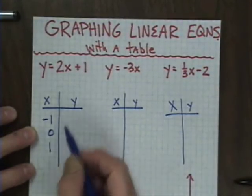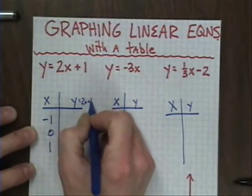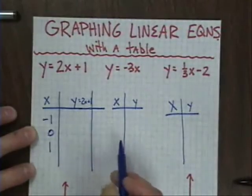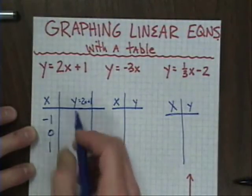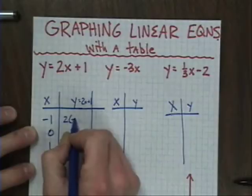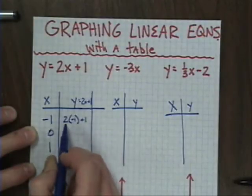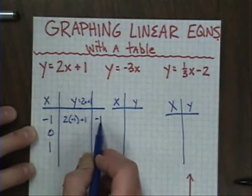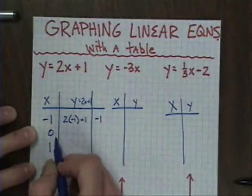Now the way this works, y equals 2x plus 1. I'm going to extend my line just a little bit. If I put negative 1 in place of x, I would have 2 times negative 1, which is negative 2, plus 1, is a negative 1. So my first ordered pair is negative 1, negative 1. We'll graph that in a moment.